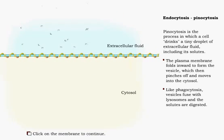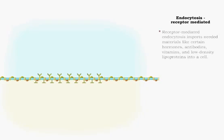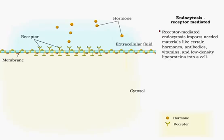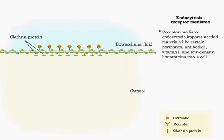Receptor-mediated endocytosis imports needed materials like certain hormones, antibodies, vitamins, and low-density lipoproteins into a cell. Specific receptor proteins bind with these substances and then interact with peripheral proteins called clathrin, found on the cytoplasmic side of the membrane.